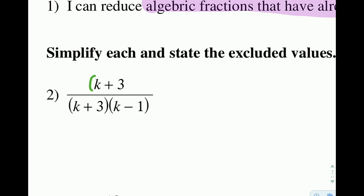If we look at this very first problem here, on top we have a full k plus 3 and on the bottom we have a k plus 3 group as well. Now we also have a k minus 1 group there. If we were to say, hey look, these cancel or these reduce to 1,